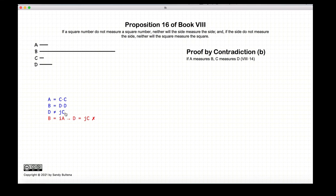But we've stated that C does not measure D. So therefore, A does not measure B. And that is the proof of the second part of this proposition.